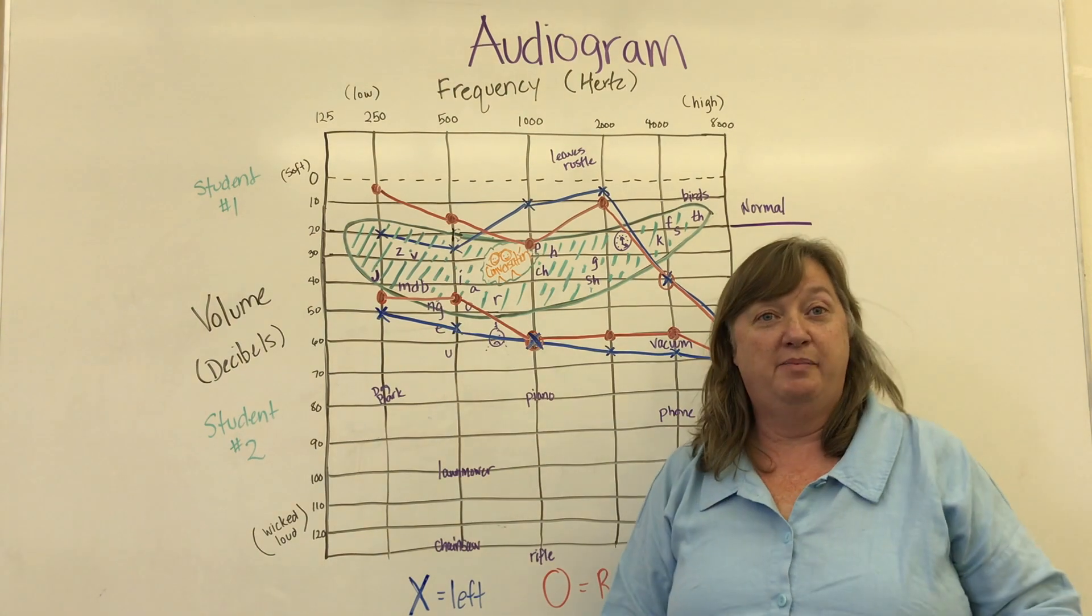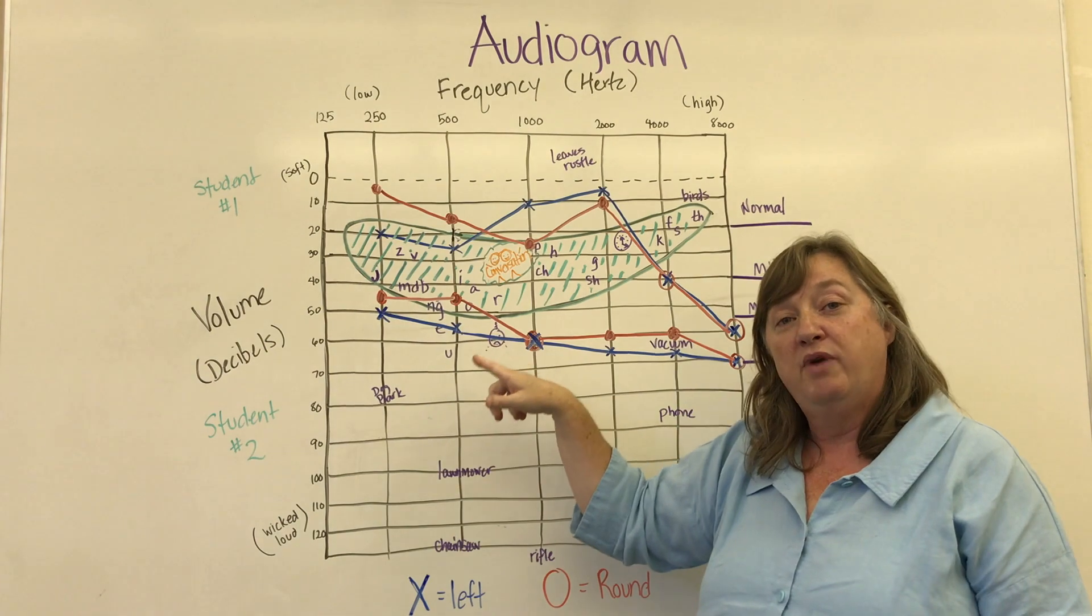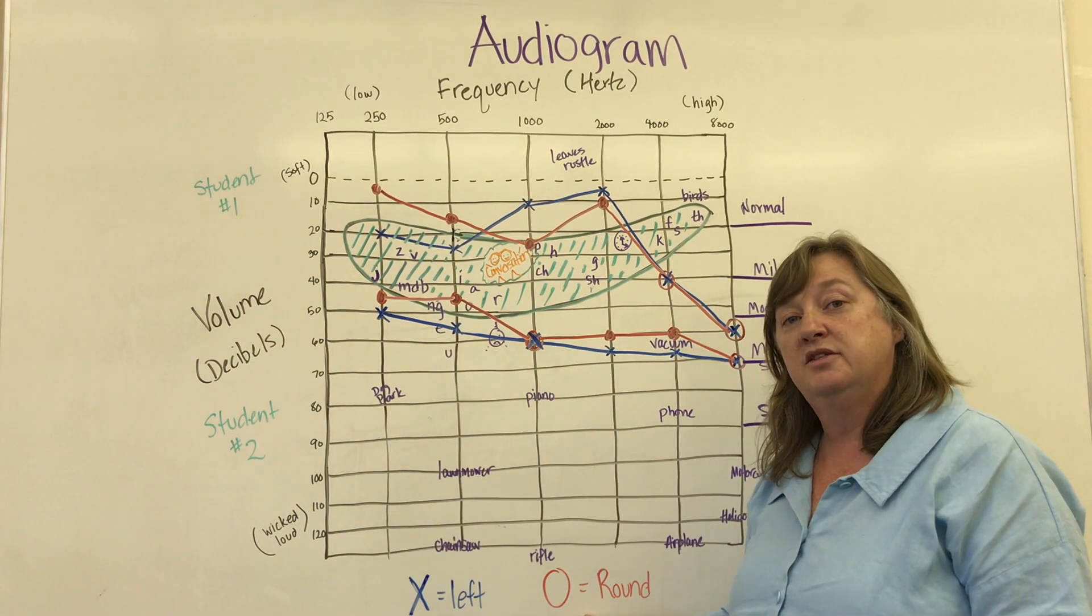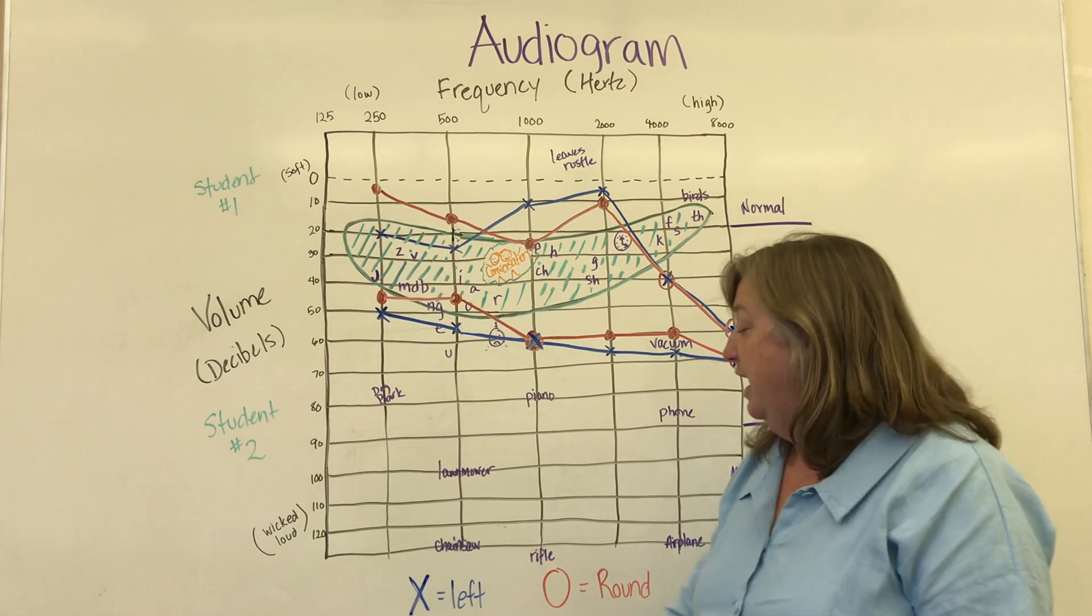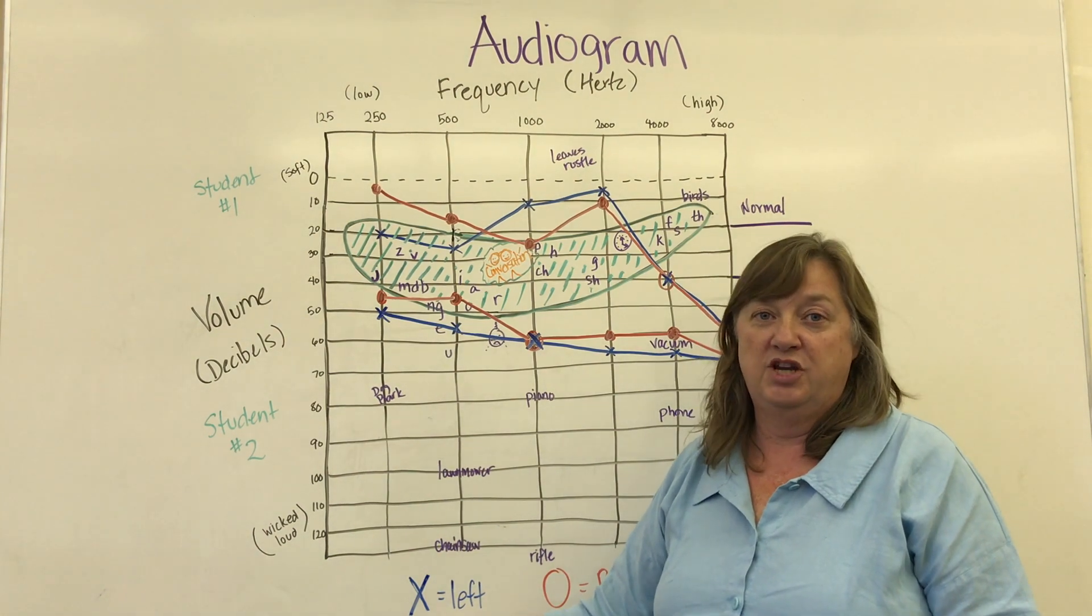So let's talk about a couple other things. These are written generally in red and blue. Red is round and is the right ear. So I always remember red, right, round. And an X is for the left ear and that's generally blue.